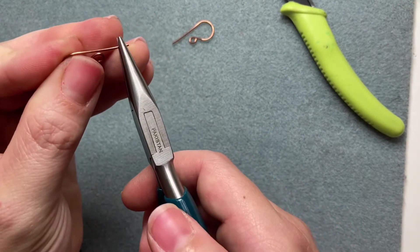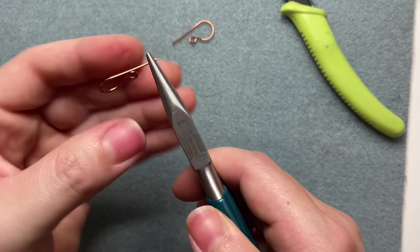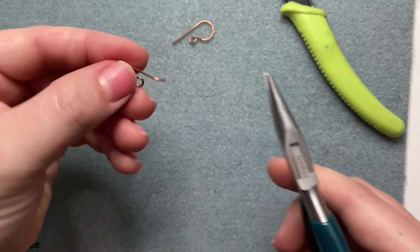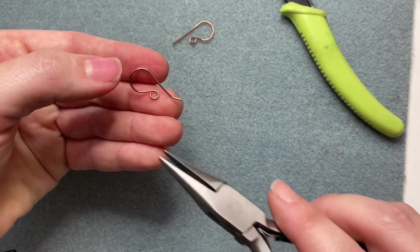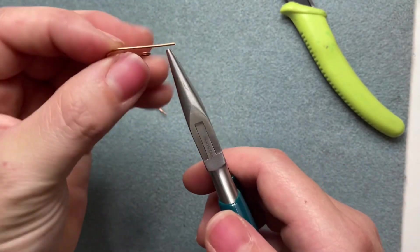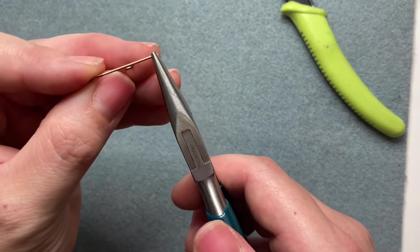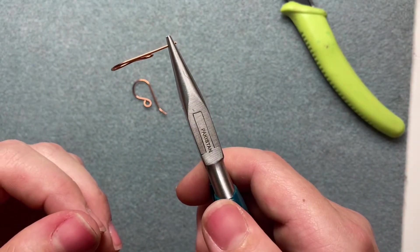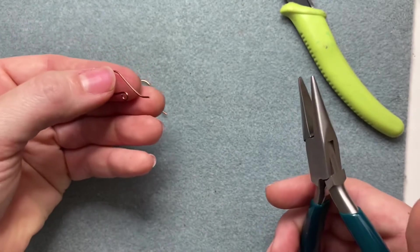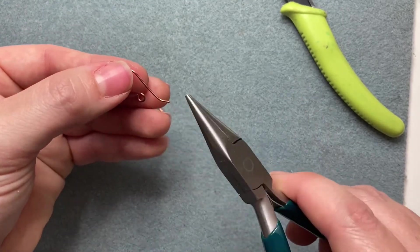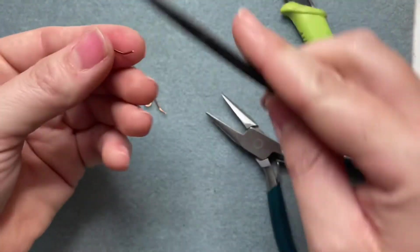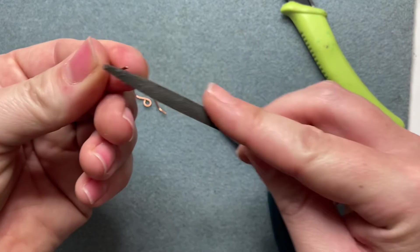I just take the chain nose and put it towards the end and just very gently pull up, and all it does is kind of create that bend here. It gives a nice little finishing touch. Again, you take your chain nose pliers and just hold it at the end and gently pull up. It's not forceful, it's just gentle and it creates that little tip at the end.